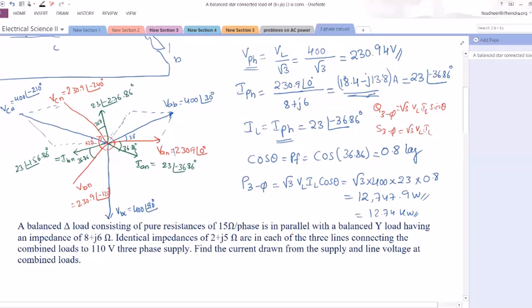This is your complete phasor diagram. It consists of line voltages, line currents, phase voltages, phase currents. You can simply write down IAN is equal to IBN is equal to ICN. Thank you.